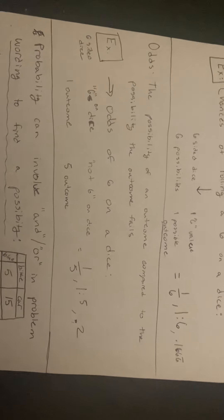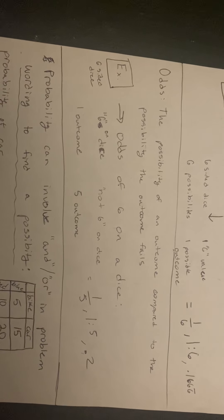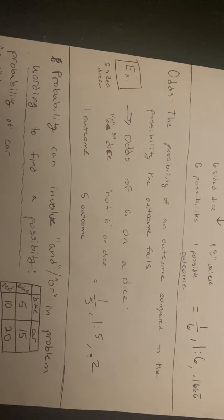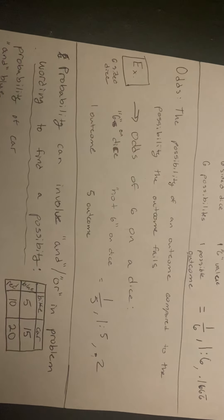Unlike the probability, this ratio is 1 to 5, or 1/5, or 0.2. Both odds and probability are ways of finding a relationship between the possibility of outcomes in a situation.